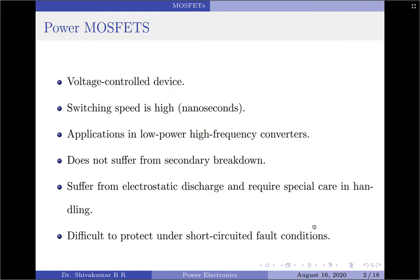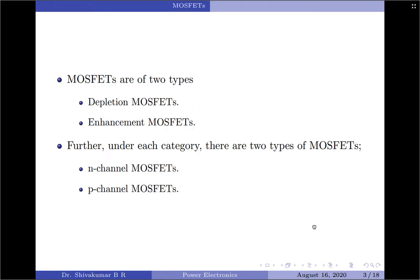However, MOSFETs have the problem of electrostatic discharge and require special care in handling. In addition, it is relatively difficult to protect them under short-circuited fault conditions. When it comes to categorization, MOSFETs are broadly categorized into two types: depletion MOSFETs and enhancement MOSFETs. Further, under each category there exist two more types: the N channel MOSFET and the P channel MOSFET.